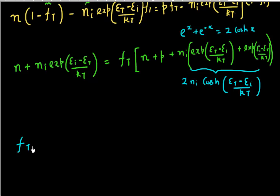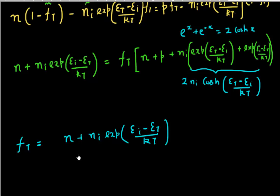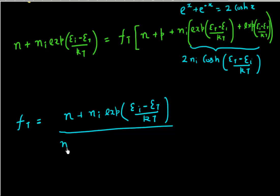Now I get an expression which relates my Ft — the probability of occupation of a trap. It comes out to be this formula. Towards the very end, what I need to do is take this formula and put it into R1 minus R2 to get my net recombination or generation rate.